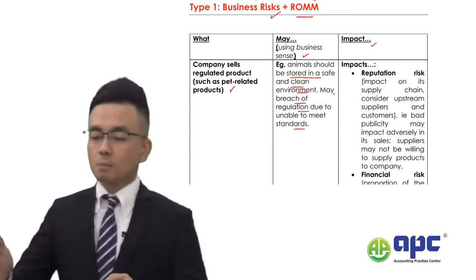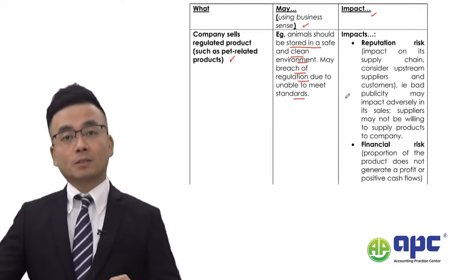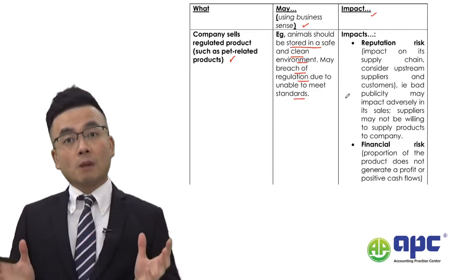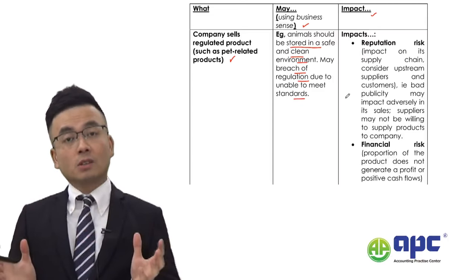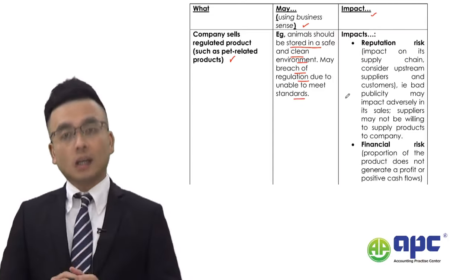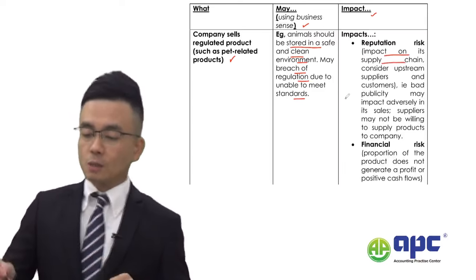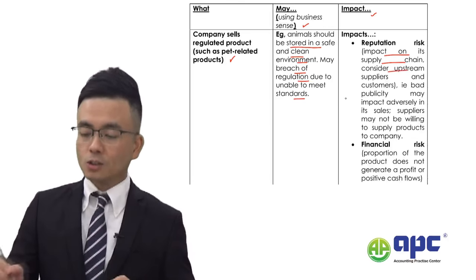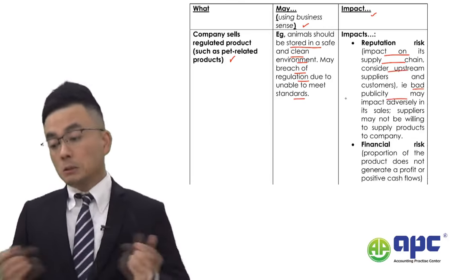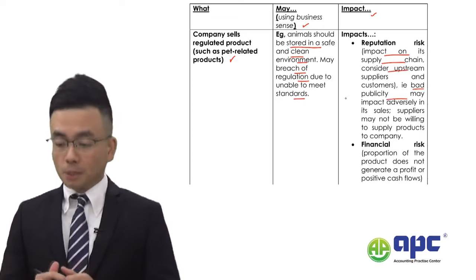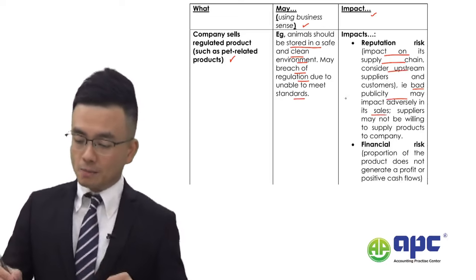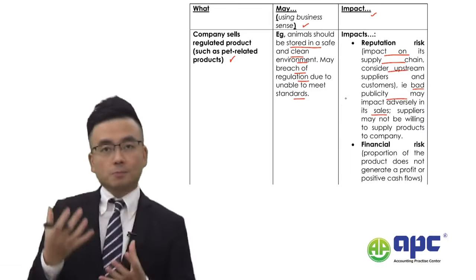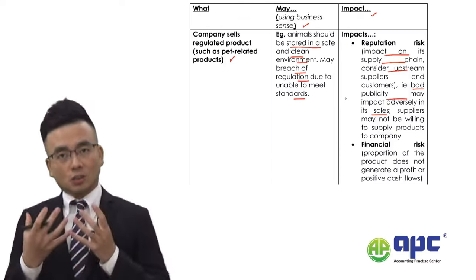Finally, it's important to discuss the impact. There's no point simply saying this would be a reputation risk — you need to further expand your answer. For example, it may impact on the supply chain; you can look at the upstream suppliers. Bad publicity may impact on sales in the future. You need to expand your answer in such a way.